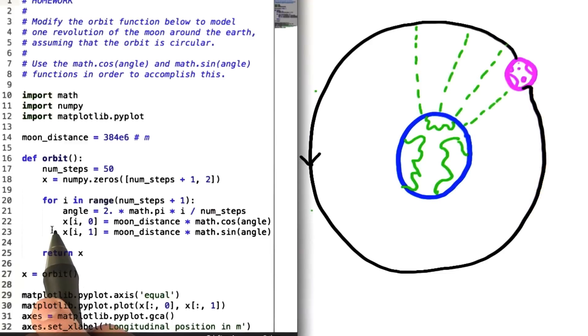After this, we use the array x to define the horizontal and vertical positions of the moon at any given time step. It's at this point that we have to remember our trigonometric functions sine and cosine. In this first line right here, we're defining the horizontal position of x for the ith time step.